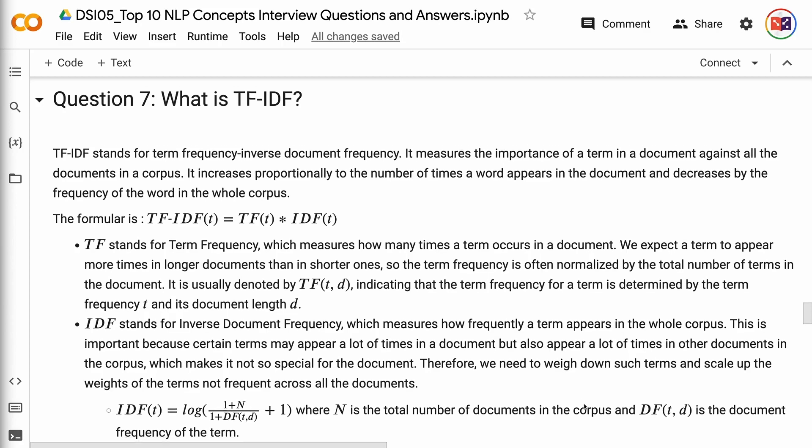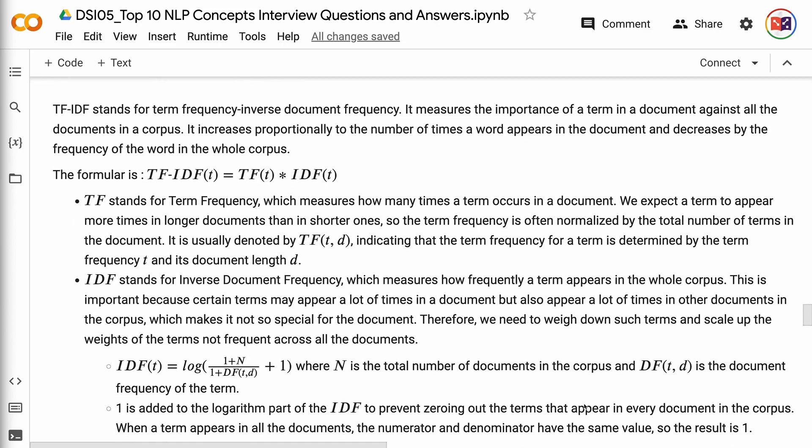TF stands for term frequency, which measures how many times a term occurs in a document. We expect a term to appear more times in longer documents than in shorter ones, so the term frequency is often normalized by the total number of terms in the document. It is usually denoted by TF(t,d), indicating that the term frequency for a term is determined by the term frequency t and its document length d.